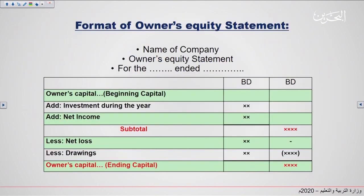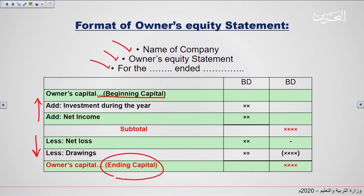Moving on to the format of the owner's equity statement: as you can see here, we have the name of the company, the name of the statement, and the period of time. We will first list the beginning capital, then the events that will increase the capital and the events that will decrease the capital, and then calculate the ending capital. This ending capital amount will then be transferred to the balance sheet, which will be our next lesson.